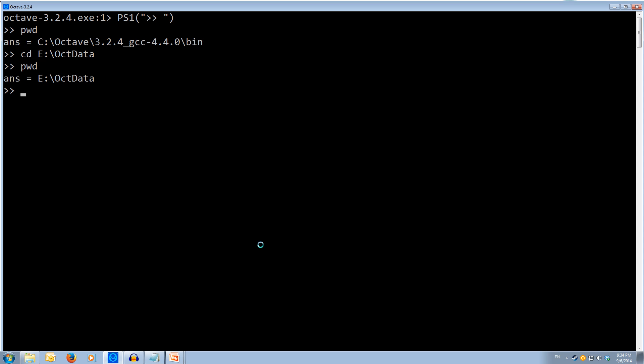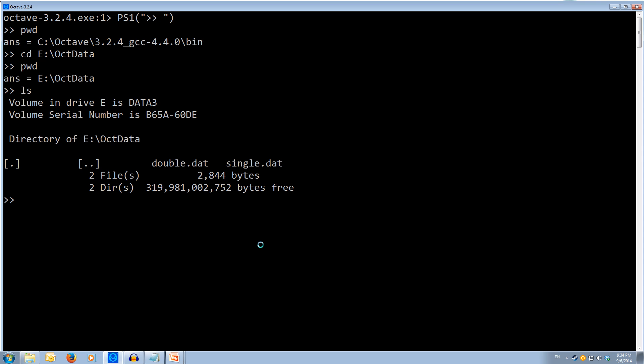And if I type ls, you can see that we're on the e drive and we're in the directory oct data. And we've got two files, double dot dat and single dot dat. So these are my two data files. And these are just a bunch of numbers, each separated on a line.